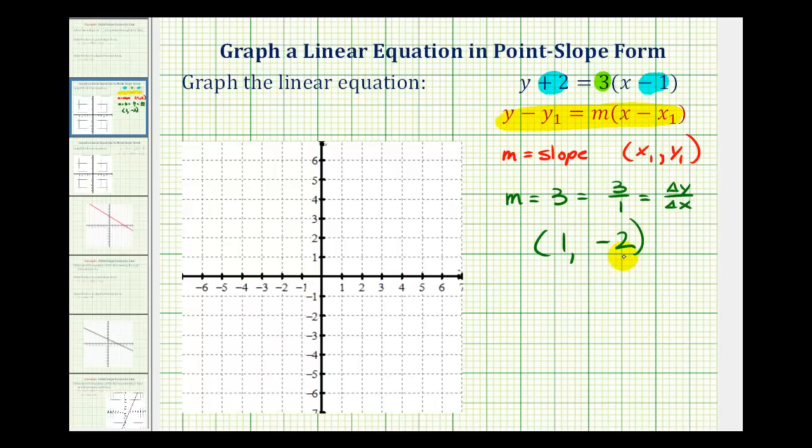And that's more than enough information to graph this line. We'll first plot the point on the line, one negative two would be right one down two would be here. And then if the slope is positive three or three over one, from here we'll move up three units and right one unit to find another point on the line.